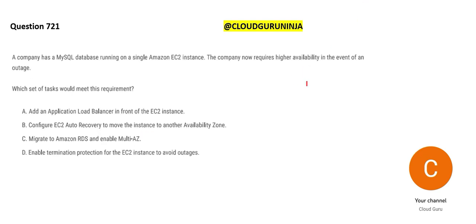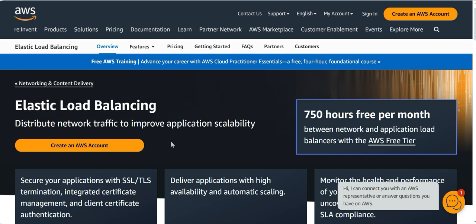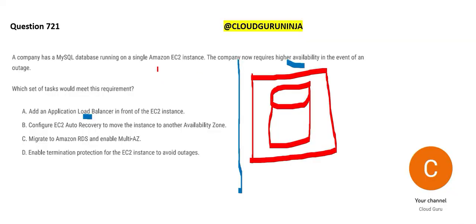Next question: they have one database inside one EC2 instance, and they want high availability — if there is an outage, the system should still be available. Option A says plug a load balancer here. But load balancer is used to balance load. You know, in your project you have team leads — if there is only one person working on a project, will you bring a team lead to manage that one person? No. So here you just have one EC2 instance — why would you bring a load balancer?